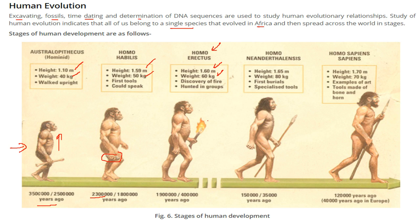Homo erectus: height 1.6m, weight 60kg. They discovered fire, started to live in groups, and hunted together — 19 lakh years ago.